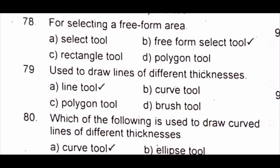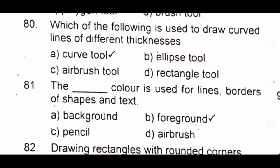Question 79: Used to draw lines of different thickness. A) line tool B) curve tool C) polygon tool D) brush tool. The answer is A) line tool. Question 80: Which of the following is used to draw curved lines of different thickness? A) curve tool. Question 81: The dash color is used for lines, borders of shapes and text. A) background B) foreground C) pencil D) brush. The answer is B) foreground.